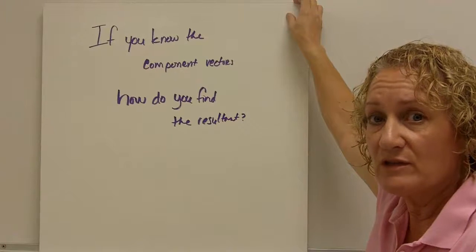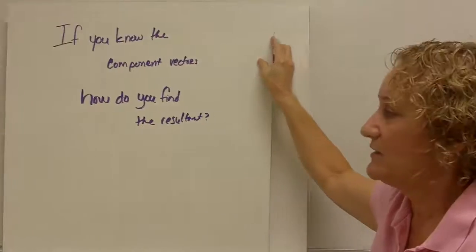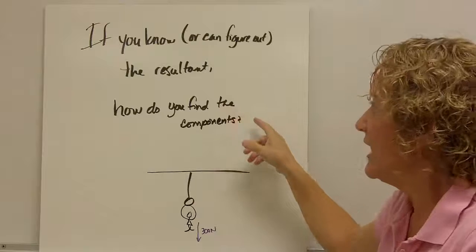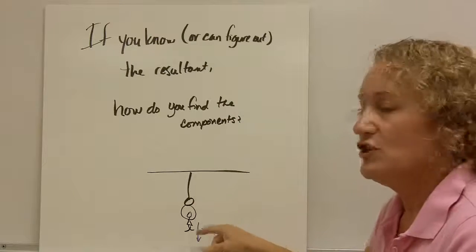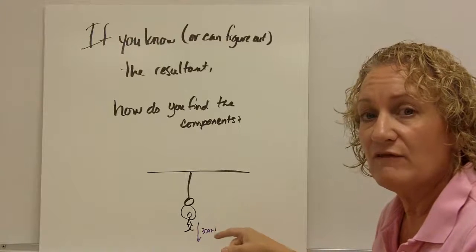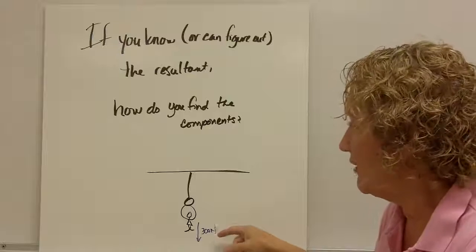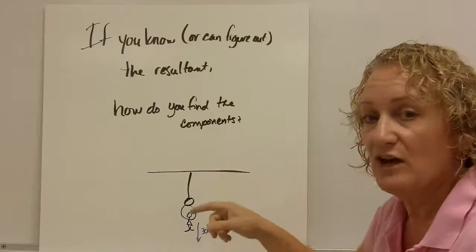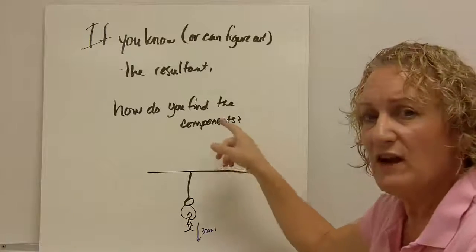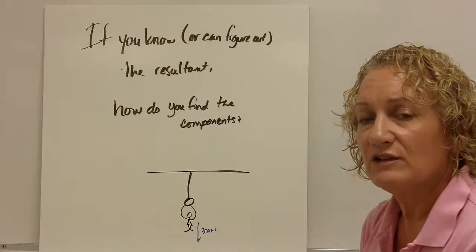So now that we know how to find the resultant when we have the component vectors, of course it begs the question, if you know or can figure out the resultant, how do you find the components? So if you have an example of a girl hanging from a ring with a weight of 300 newtons to the down, because gravity is pulling her down, we can figure out the resultant vector is 300 newtons up. But if it wasn't straight up, how could we find the components? How could we find the parts that make up that resultant vector?